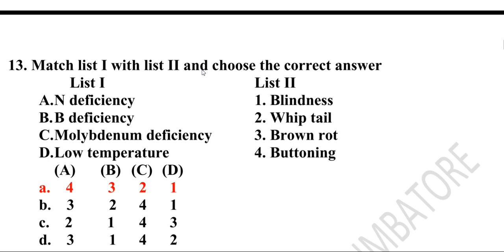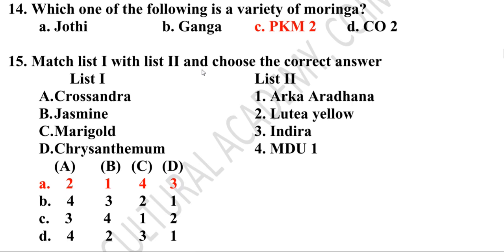Thirteenth question: Match list one with list two and choose the correct answer. Nitrogen deficiency — buttoning; boron deficiency — brown rot; molybdenum deficiency — whiptail; low temperature causes blindness. Option A is the correct answer. Fourteenth question: Which one of the following is a variety of moringa? The answer is PKM2.